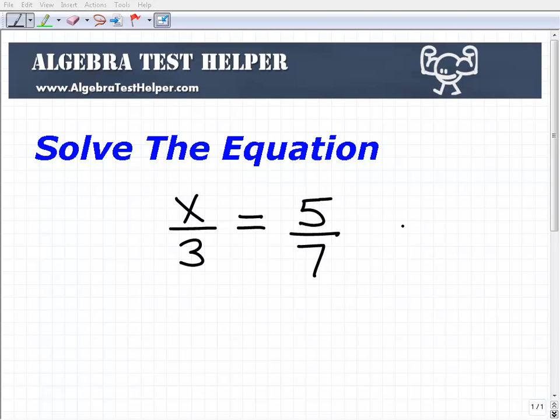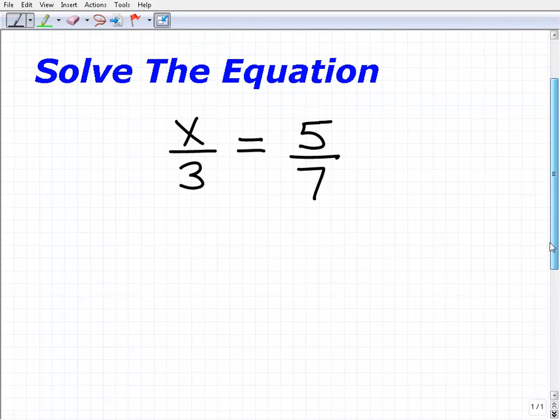Okay, so let's go and solve this equation here: x over 3 equals 5 over 7. Now there's a couple different approaches to solve an equation like this.